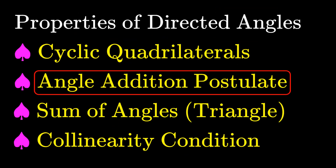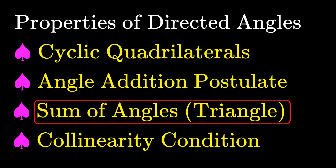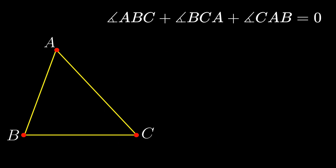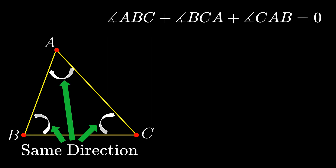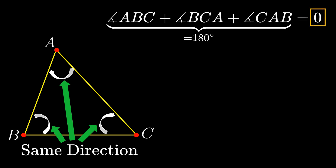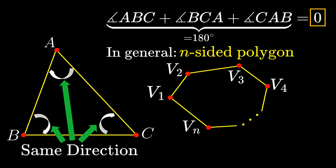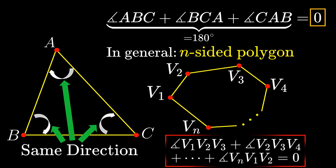Next, we have the sum of angles in a triangle. Given points A, B, and C, the sum of the directed angle ABC, the directed angle BCA, and the directed angle CAB is zero. Since all three angles are in the same direction, they have the same sign and add up to 180 degrees, which equals zero modulo 180 degrees. More generally, in an n-sided polygon with vertices V1, V2, up to Vn, the sum of all interior angles measured as directed angles equals zero.